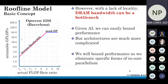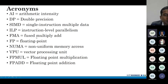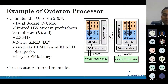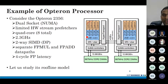We'll discuss the computation and communication ceilings, taking the example of an Opteron processor. It is a dual socket system. It has three prefetchers. We have a total of eight cores — four cores here and four cores there. It is a two-way SIMD double precision processor.